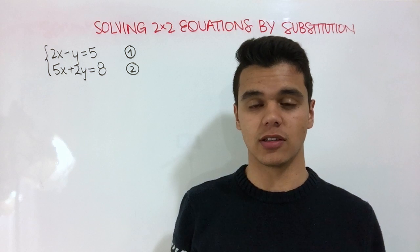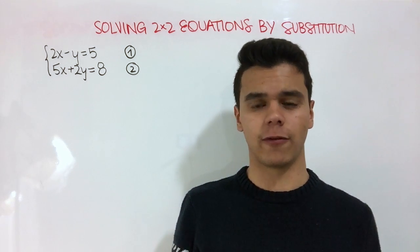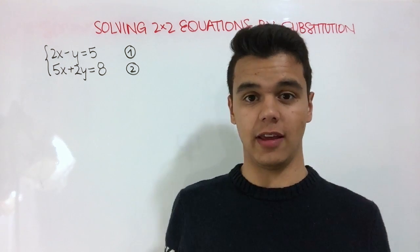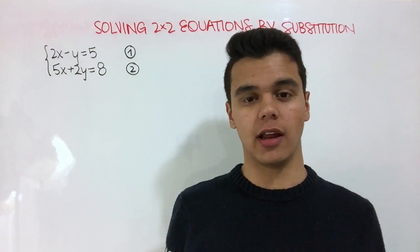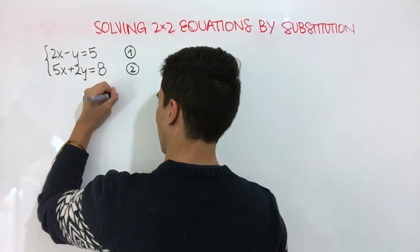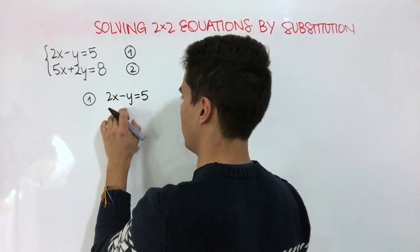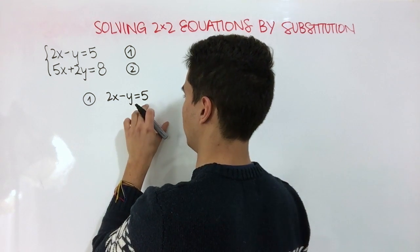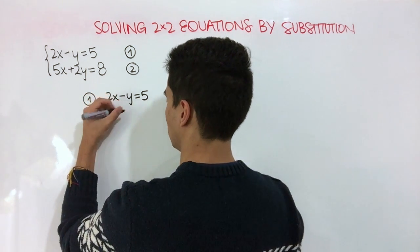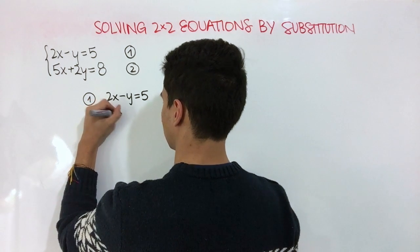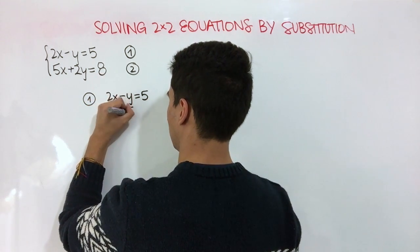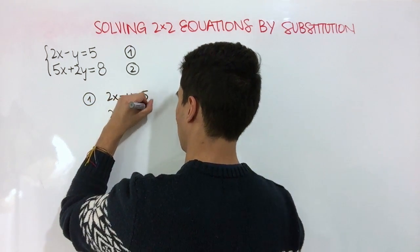So the first thing that we have to do is choose any of our equations and solve for any variable that we want. In this case, I'm going to choose the first equation, and I'm going to solve for y. So we're going to add y on both sides and subtract 5 on both sides. So we end up with 2x minus 5 is equal to y.